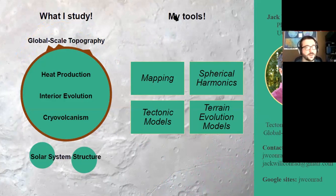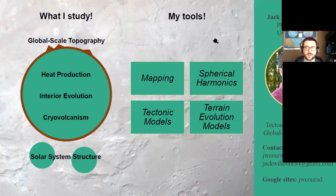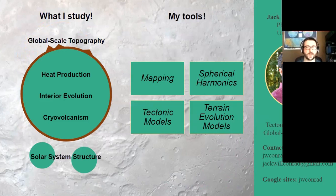In terms of what I study more generally, I like to study global-scale topography, heat production, interior evolution, cryovolcanism, and how all that relates to solar system structure. The way I do this is through mapping, spherical harmonics, tectonic models, and recently I've been dabbling with terrain evolution models. My contact information is on the right, and I'm currently looking for postdocs starting either in the fall of this year or early next year — I'm rather flexible.